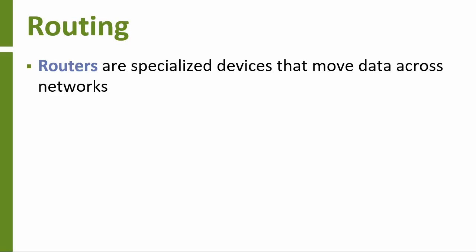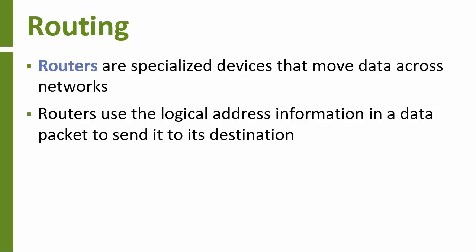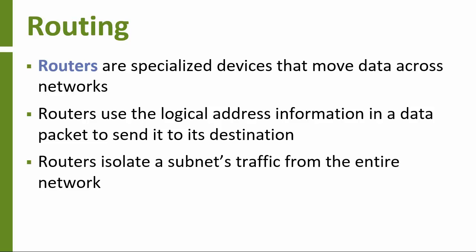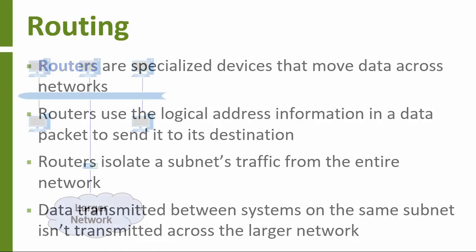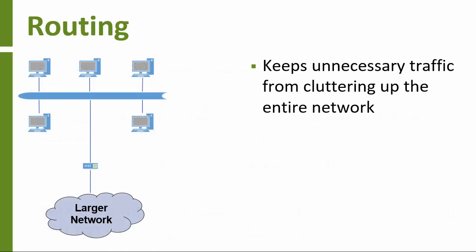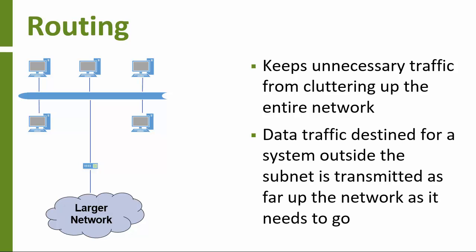Routers are special devices that, as their name implies, route data back and forth across networks. A router understands the logical address information contained in a piece of data and uses that to direct the data across the network to its destination. If set up correctly, a router lets you separate a subnet from the larger network, keeping data transmitted between computers on the subnet from being passed up to the larger network. Of course, if a piece of data is addressed to a computer outside of the subnet, the router will forward it onto the larger network.